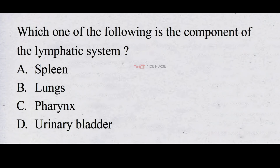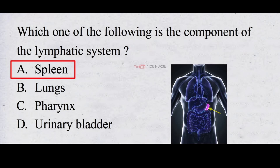Which one of the following is the component of the lymphatic system? A. Spleen B. Lungs C. Pharynx D. Urinary bladder. The correct answer is A. Spleen. Spleen is the component of the lymphatic system.